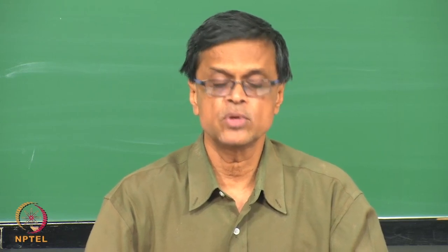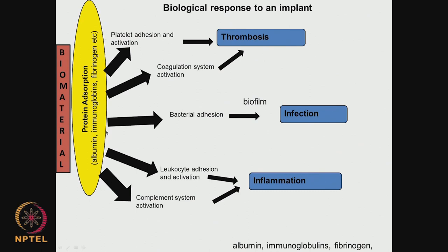Looking at this slide, which I discussed in the previous class: we have a biomaterial and immediately proteins get adsorbed — proteins like albumin, immunoglobulin, fibrinogen, etc. This can lead to platelet adhesion and activation, and also activation of the coagulation system which can lead to thrombosis. Bacteria can adsorb on top of the protein; some proteins enhance bacterial adhesion, leading to biofilm formation and infection. We also have leukocyte adhesion activation and complement system activation leading to inflammation.